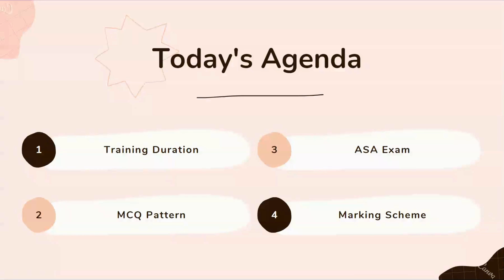All this criteria changes based on your onboarding time and business requirements. For the MCQ pattern: people on the six-month training will have 20 questions carrying one mark each — a 20-mark paper. People on the two-month training will have a 40-mark question paper. These are the differences based on your module, but the ASA exam is common for both.